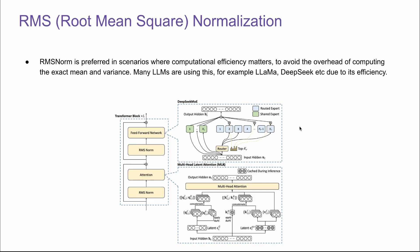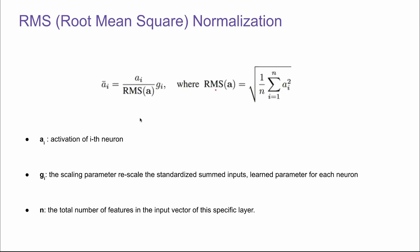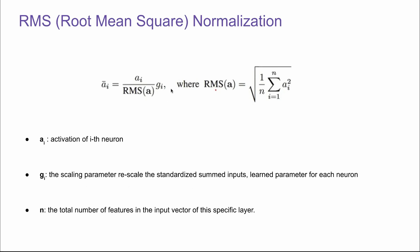So it's definitely catching up. This is the formula for RMS norm — you can see it's a lot simpler, with no additional steps. A_i is the activation for the i-th neuron, and you first calculate the RMS for A, which is the sum of all A_i squared divided by N, where N is the total number of neurons in the input vector of that specific layer. Then there's a learnable scaling factor applied. So this is RMS normalization — already looks a lot simpler than layer or batch normalization.